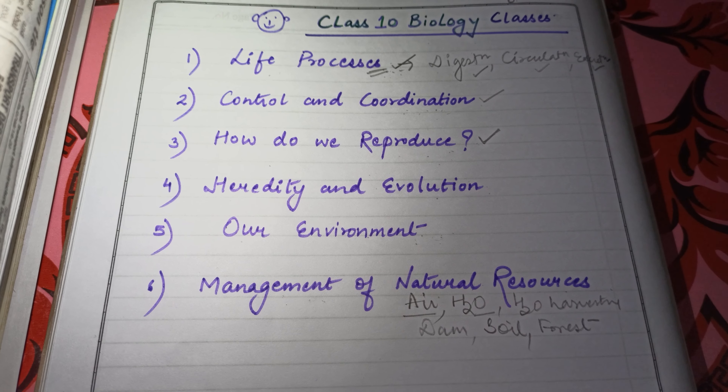The fourth chapter is Heredity and Evolution. In this chapter we will study how genes transfer from parents to offspring, and how humans and bacteria evolved. We will also look at how evolution takes place to make organisms fit to adapt to their environment.